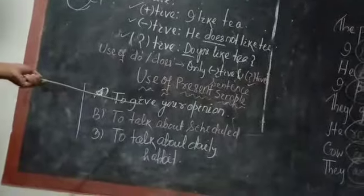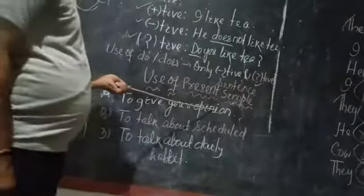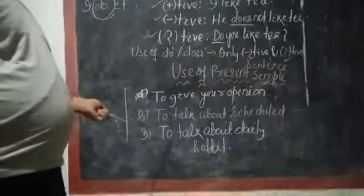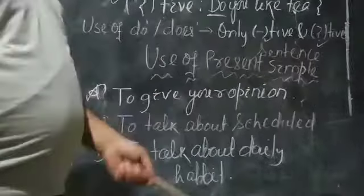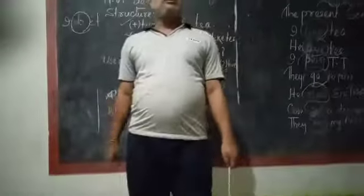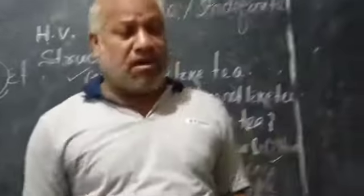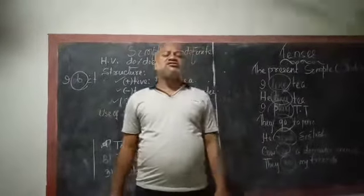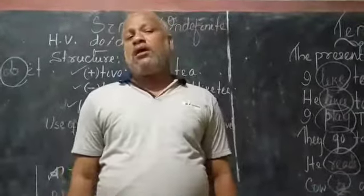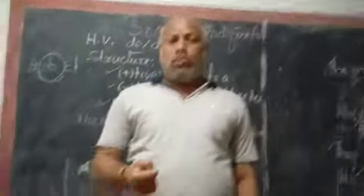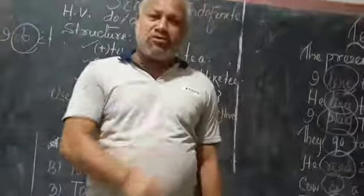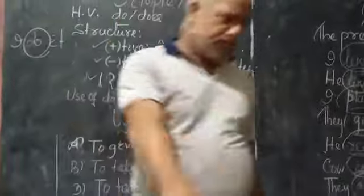Where we use present simple. Number one, to give your opinion. Number two, to talk about schedule. Number three, to talk about daily habits. Number four, universal statement. Number five, general statement. Number six, scientific proof. In all these cases, we use present simple.